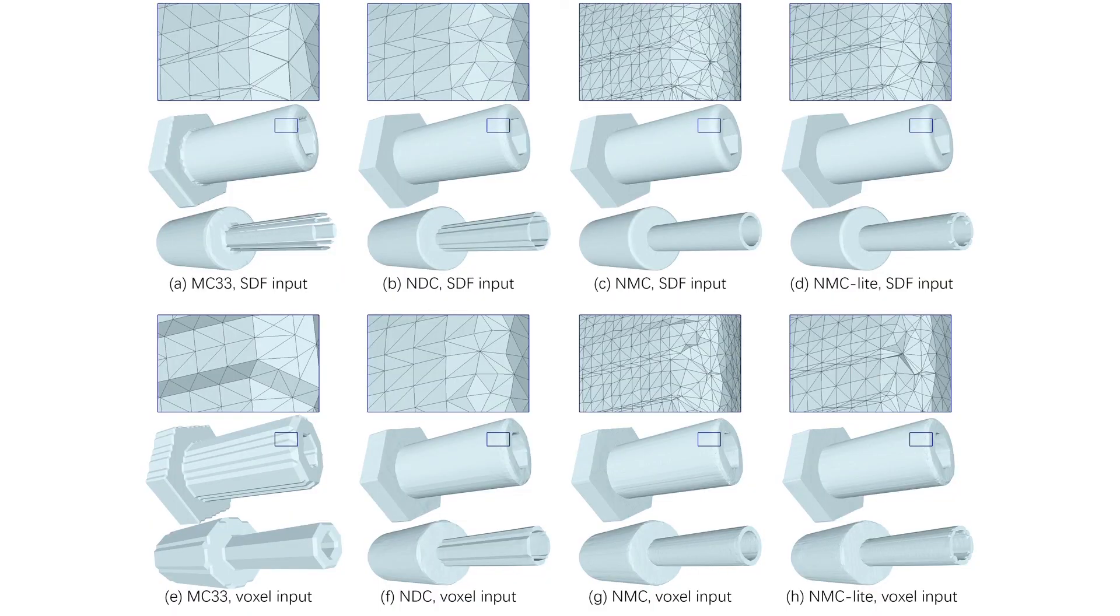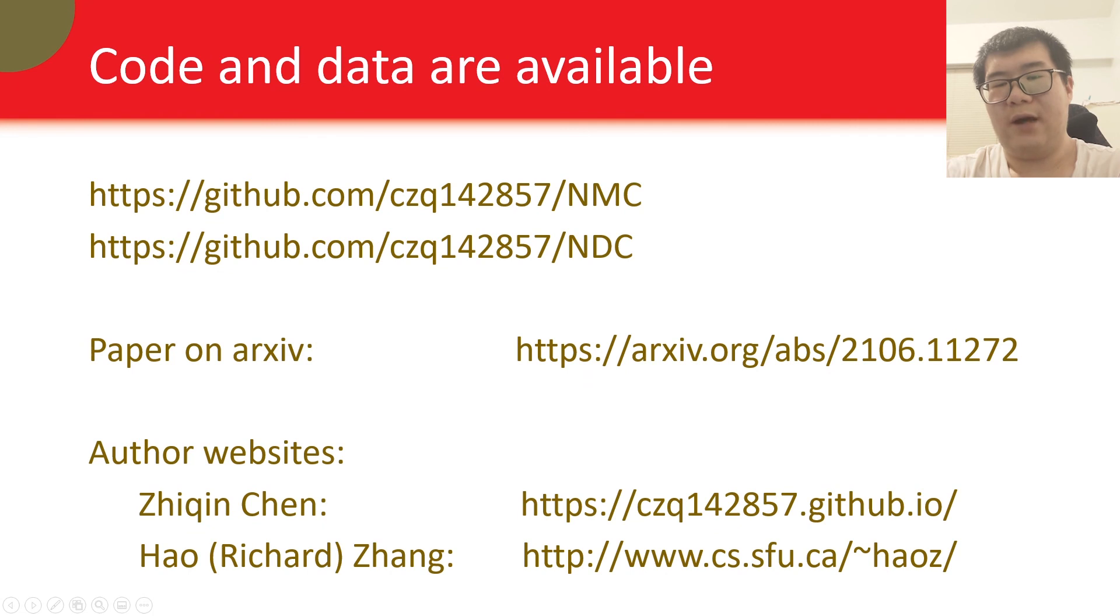And here are some results. You can see that NDC uses less triangles, with better triangle quality compared to NMC. And it is still able to reconstruct sharp features. The code and data of NMC and NDC are available on GitHub. Here are the links to our paper and personal websites. Thank you for watching.